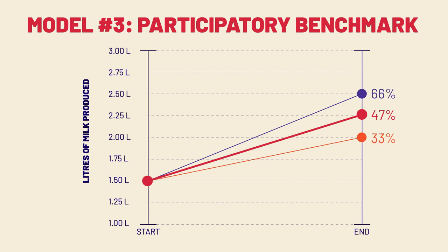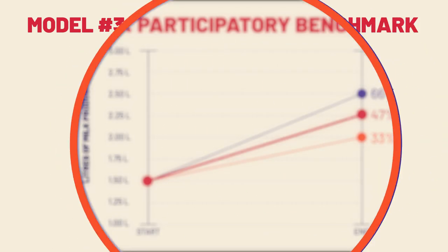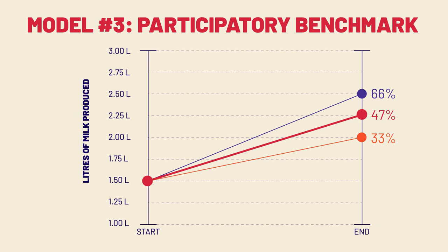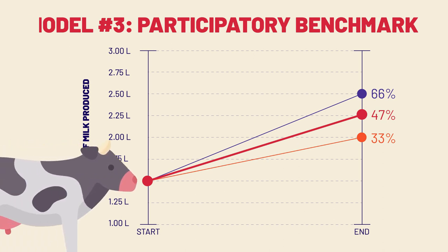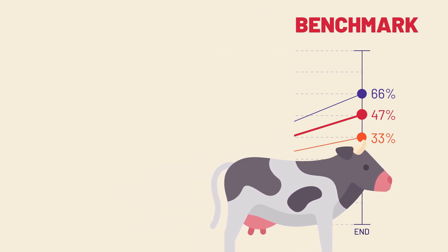Not only did the results get better, but our clarity around what the results mean got much better. This is how the layers of lenses in your model can help. We don't have to control for all productivity from extra time because we have set an equitable, community-created benchmark for it. In this model, we recognize that productivity increases aren't the only metric that matters.